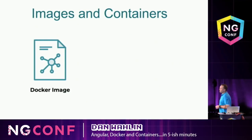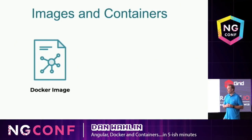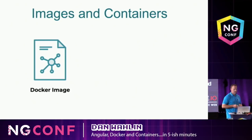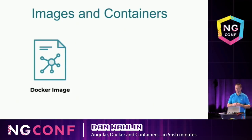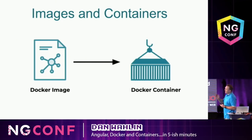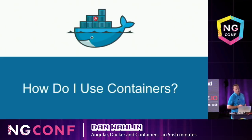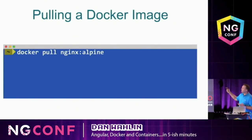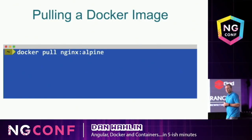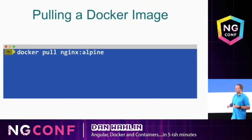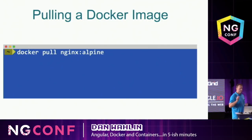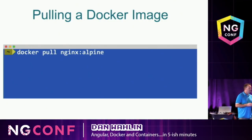So, what are containers? In a nutshell, I'm going to show you these things called images — one of them is Nginx. We take an image that might have our Angular code and run it as a container. The first thing you do is pull an image down locally. You install Docker Community Edition and run Docker pull. In this case, I'm using Alpine, a really small Linux variant, with Nginx running on top of Alpine Linux.